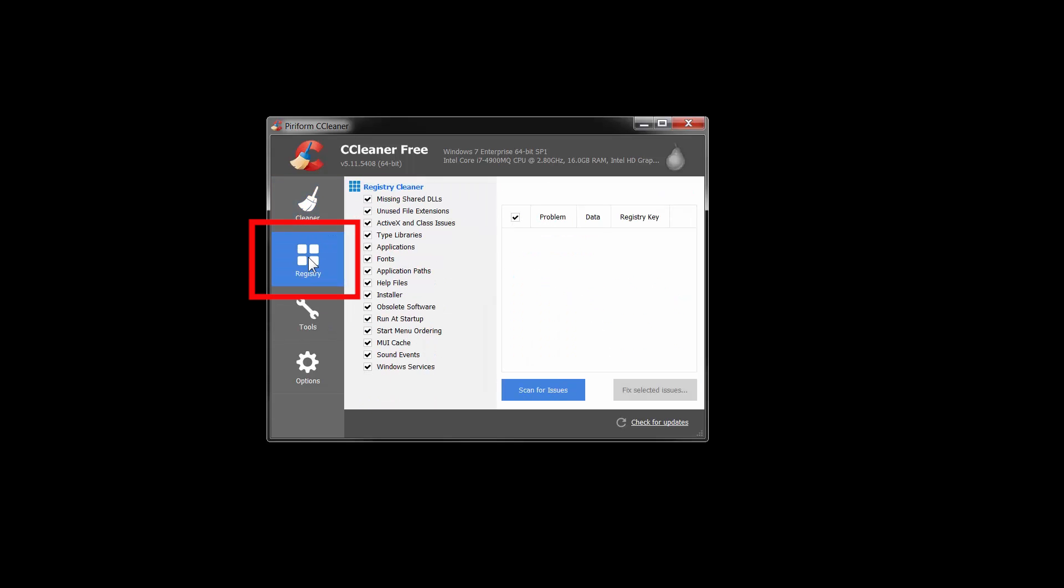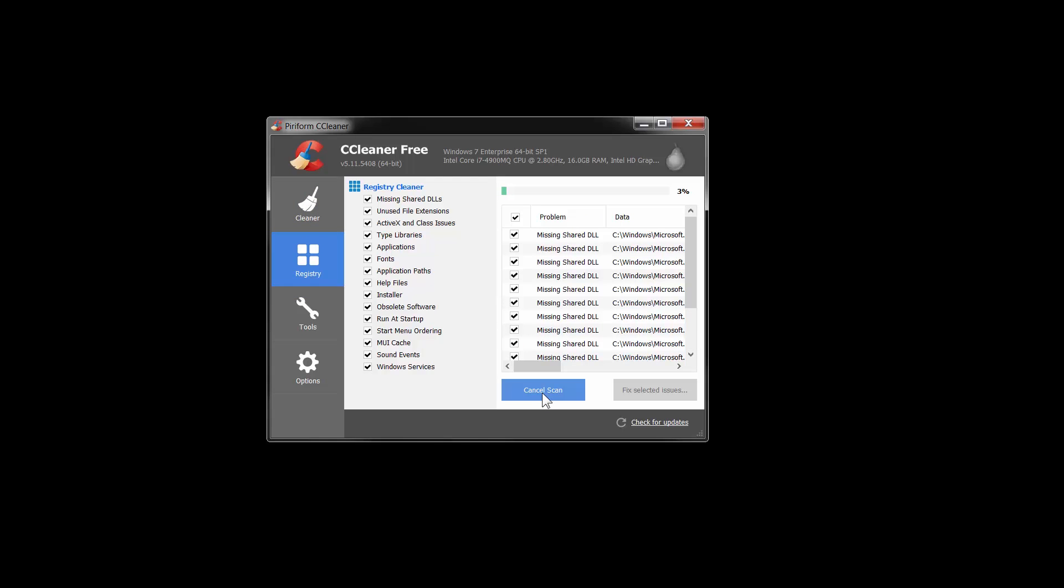Now the second one is called the registry button and the registry is where CAD developers will save your user settings, you know, if you customize your interface or serial numbers and things like that. And they have a tendency to just throw things in there left and right that may or may not really do much for you.